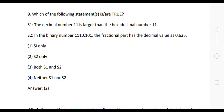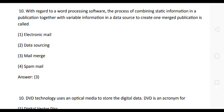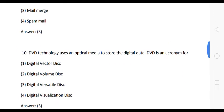Question 10: With regard to word processing software, the process of combining static information in a publication together with variable information in a data source to create one merged publication is called — options: (1) electronic mail, (2) data sourcing, (3) mail merge, (4) spam mail. The correct answer is option 3: mail merge.